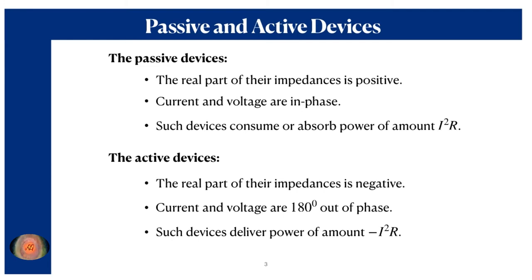The GAN and IMPATT diodes basically fall in the category of active devices. Passive devices absorb power by an amount I²R, because the real part of the impedance for passive devices is positive, so that I²R falls in the first quadrant. For an active device such as the GAN diode and IMPATT diode, the real part of their impedances is negative, and that is why voltage and current differ by 180 degrees within these active devices, whereas in passive devices the current and voltage are always in phase.